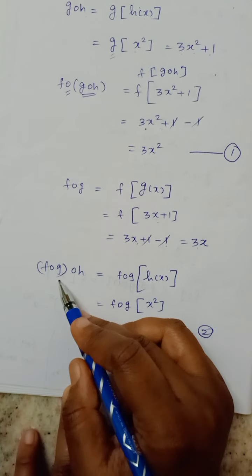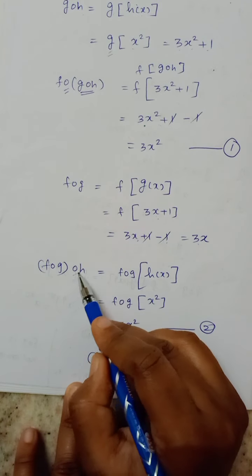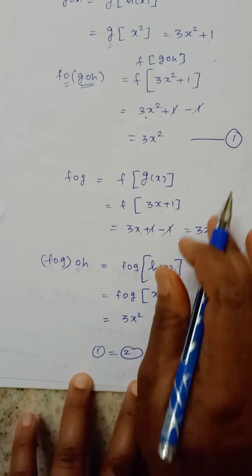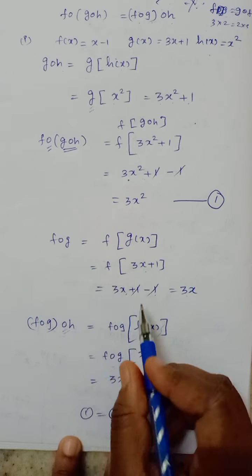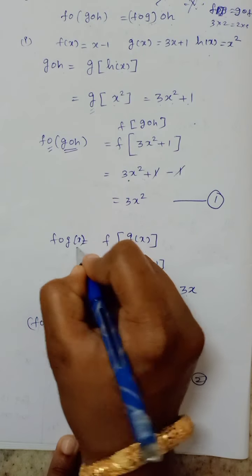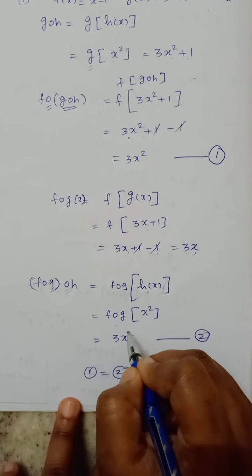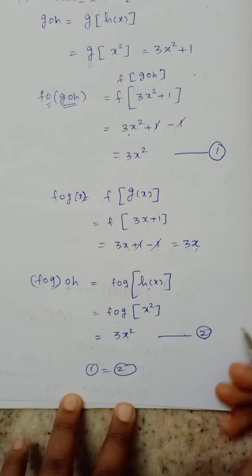So f of x minus 1 is 3x plus 1 minus 1 equals 3x. Then (f∘g)∘h equals (f∘g) of h of x equals 3x square.